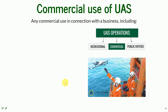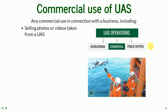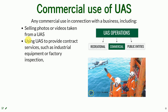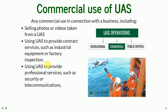Now we move to the commercial use of UAS. This is the second kind of use that is highly regulated. Commercial use of UAS is a use in connection with a business and includes everything that will bring you compensation — so selling photos or videos taken from the UAS, or using the UAS to provide contract services, monitoring industrial equipment, or inspecting a factory, or providing professional services like security or telecommunications.